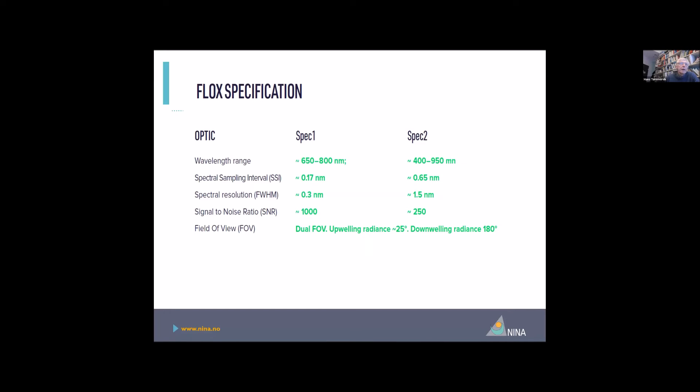And this is actually the FLOX specification. It's consisting of one very fine resolution spectrometer with a wavelength range of 650 to 800 nanometer and the more coarse resolution spectrometer with a wavelength range of 400 to 950 nanometer. And the best spectral resolution is 0.3 nanometer for the high resolution spectrometer.